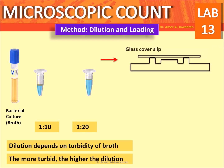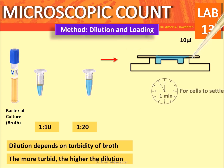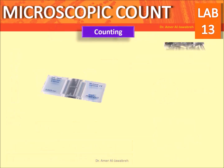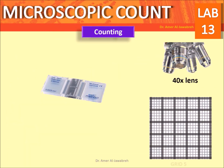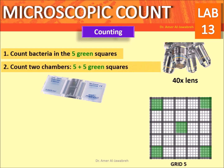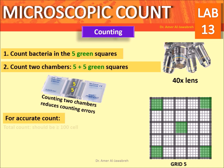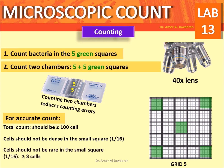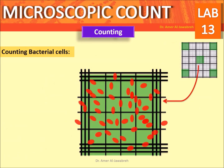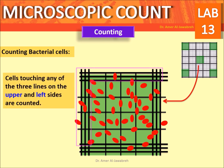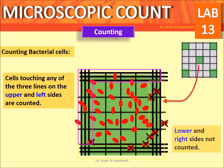Apply a glass coverslip and load 10 microliters of the diluted broth. Wait one minute for cells to settle. Start microscopy at 10x, counting in grid 5 — count bacteria in the 5 green squares: the 4 corner squares and the middle square. Count 2 chambers to reduce errors. For boundary rules: cells touching any of the 3 lines on the upper and left sides are counted; cells on the lower and right sides are not counted.